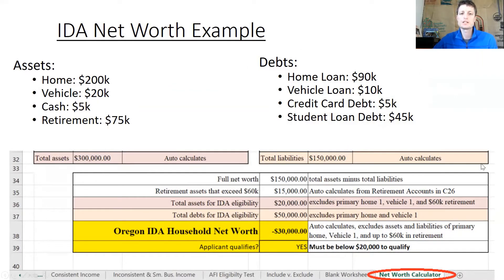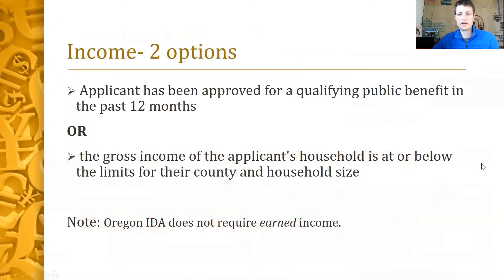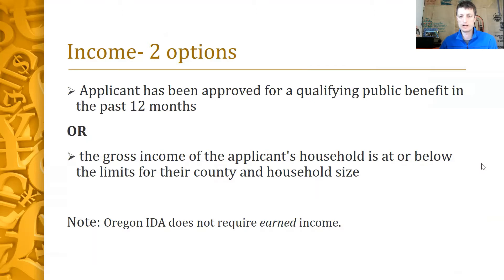Now let's move on to income for IDA, where you have two options. Either the applicant has been approved for a qualifying public benefit in the last 12 months, or you verify that the gross income of the applicant's household is at or below the limits for their county and household size. Oregon IDA does not require earned income.